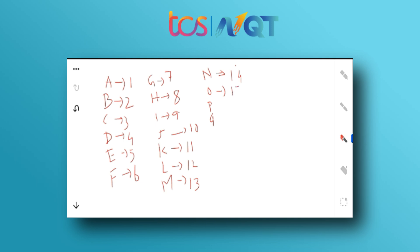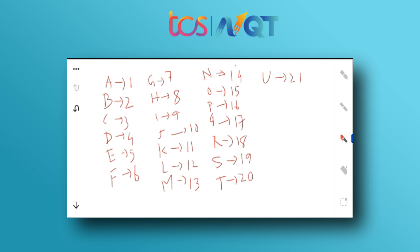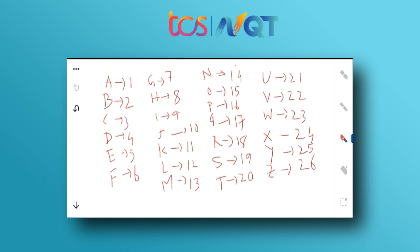R=18 — remember 'Right to Vote,' the age to vote is 18. S=19 follows from R. T=20 — remember T20 cricket format. U=21 — remember 'Under 21' game format. V=22 follows from U. W=23, X=24, Y=25, and Z is the last letter so Z=26.